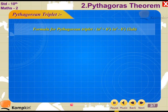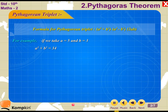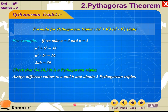Formula for Pythagorean triplet: For example, if we take A equal to 5 and B equal to 3, then A square plus B square is equal to 34, A square minus B square is equal to 16, and 2AB is equal to 30. Check that 34, 16, 30 is a Pythagorean triplet. Assign different values to A and B and obtain 5 Pythagorean triplets.